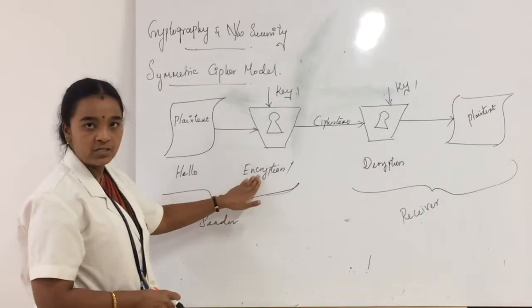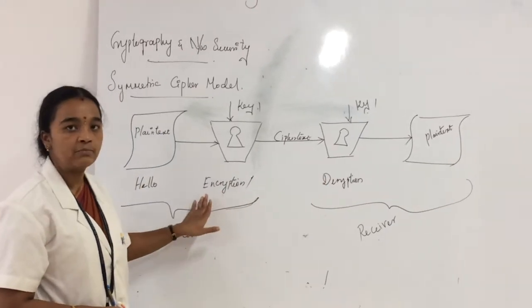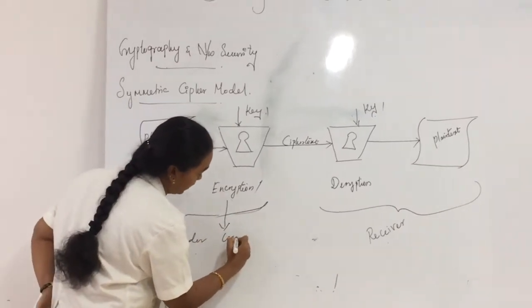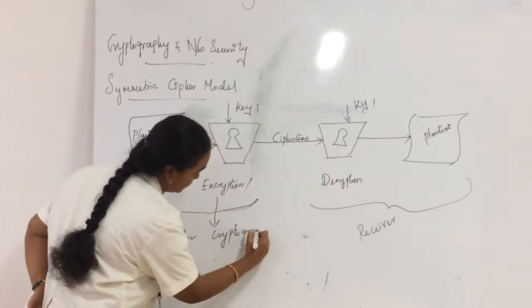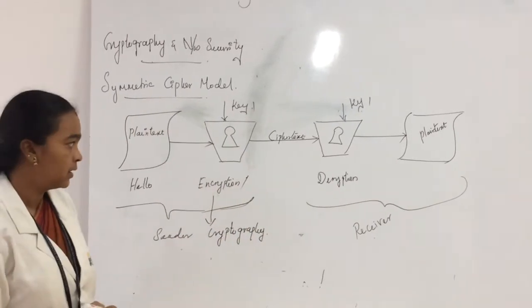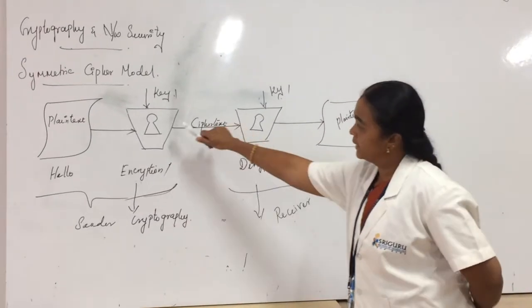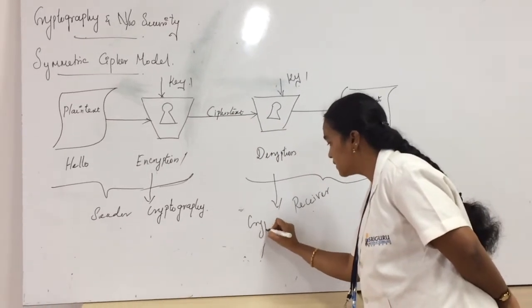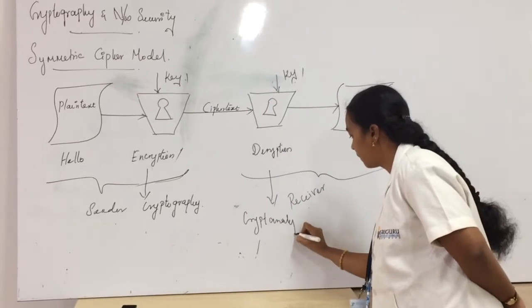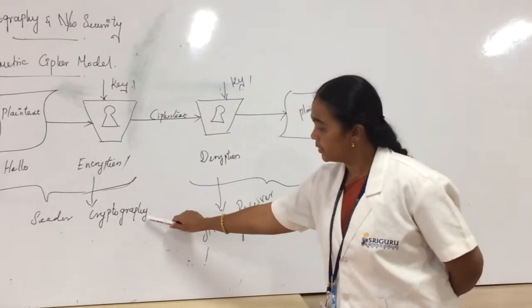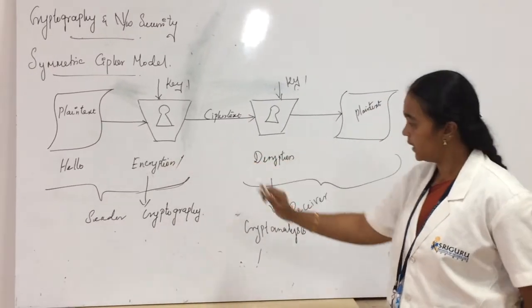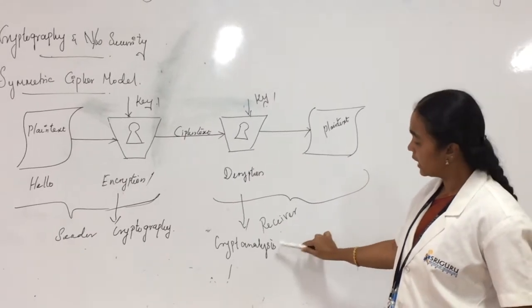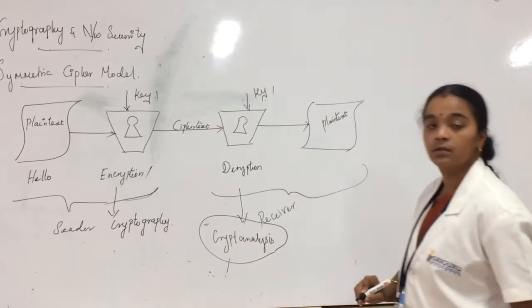In the Encryption side as well as the Decryption side, we are using some schemes. The schemes applied under Encryption are called Cryptography. Some schemes are applied in Decryption without any knowledge of Plain Text and Key — this is called Cryptanalysis. Cryptography is on the sender side and Cryptanalysis is on the receiver side.